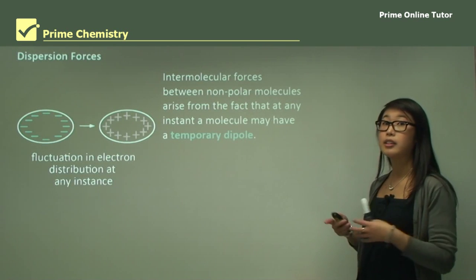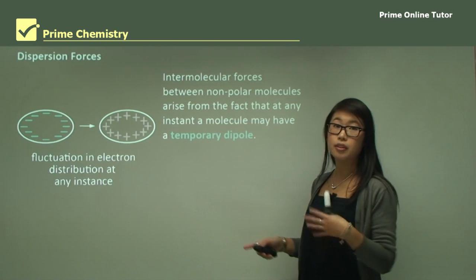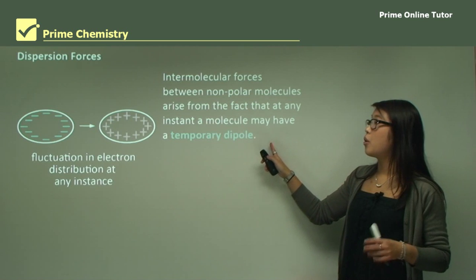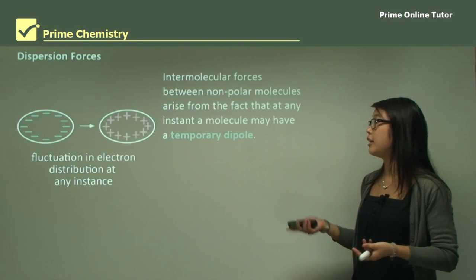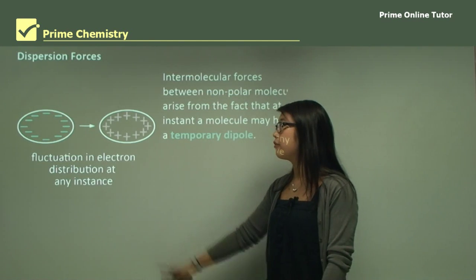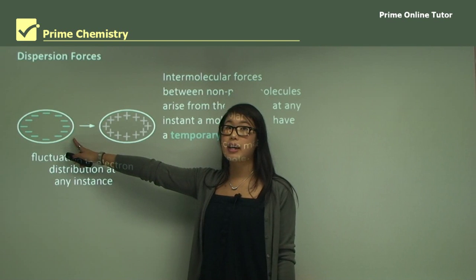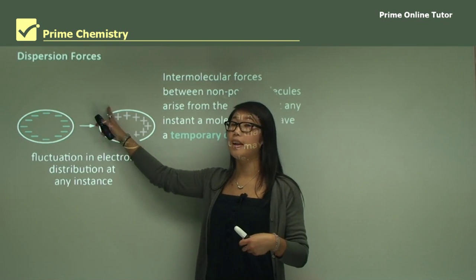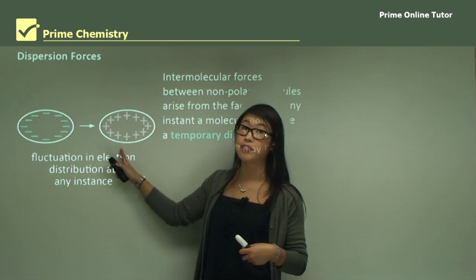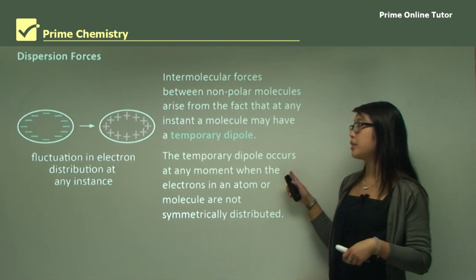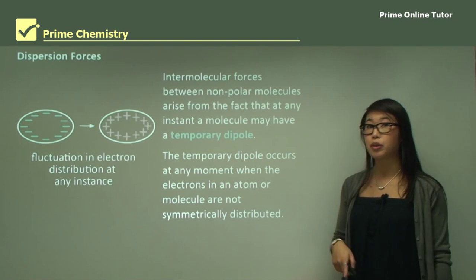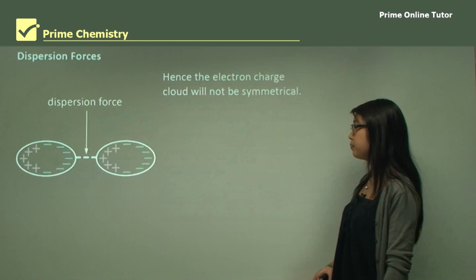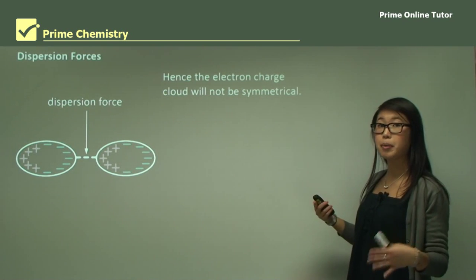We can also look at dispersion forces, which is slightly different. Intermolecular forces between non-polar molecules tend to be dispersion forces. This is because we get an instantaneous and very temporary induced dipole — a fluctuation in electron distribution at any time. A slight negative charge can move to one side, which repels electrons on that side, moving them across. So then one side becomes slightly more positive. A temporary dipole occurs at any moment when electrons in an atom or molecule are not symmetrically distributed.